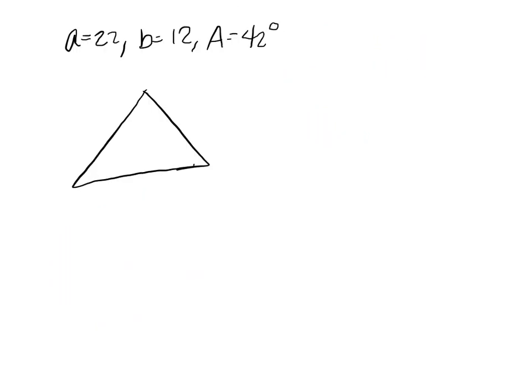We're told that angle A is 42 degrees, side A is 22, and side B is 12. I'm looking at this as a side-side-angle, which we're going to use law of sines for according to the formula sheet. We also have to worry about the ambiguous case, but A is bigger than B, so there's going to be one triangle.